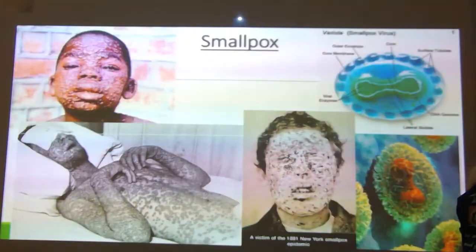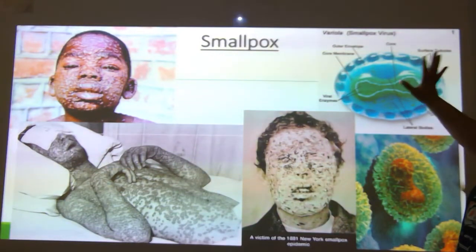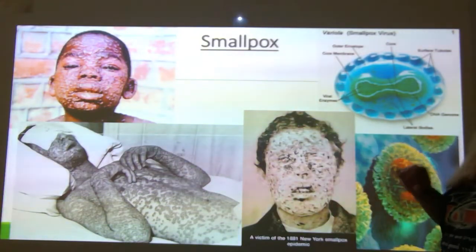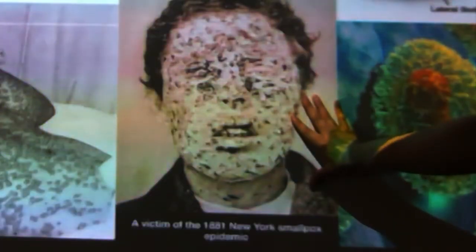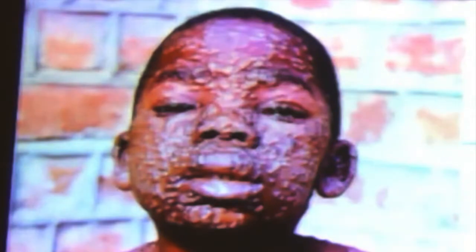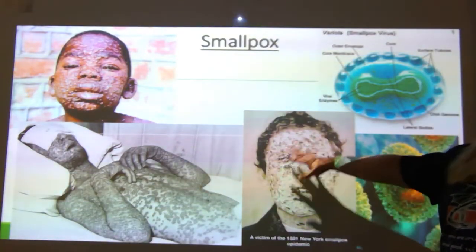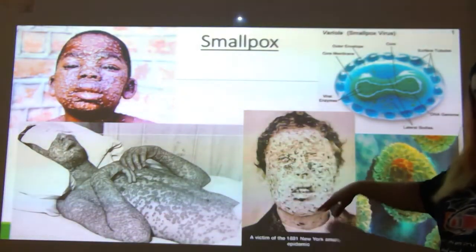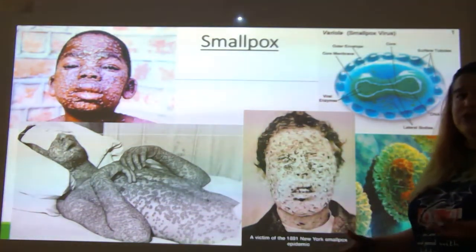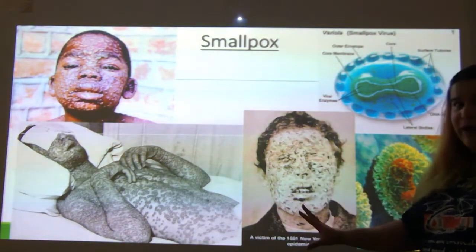Here are examples — this is the Variola virus. These are people that have smallpox. This is a person who got better — look at the scarring. That's just awful. This is a person suffering from it, and this is a child who recovered. When I talk about scarring, this is what it means. And that's if it doesn't kill you through the toxemia route.